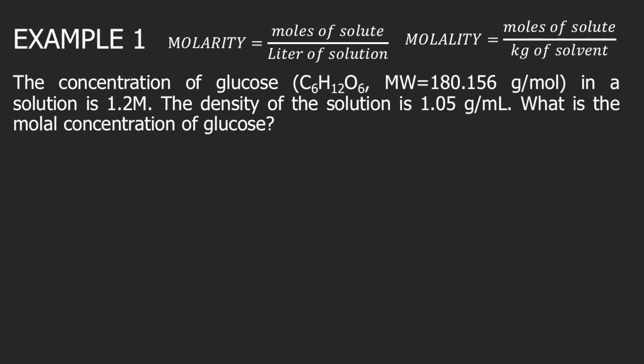Let's try our first example. The concentration of glucose in a solution is 1.2 molar. The density of the solution is 1.05 grams per mL. What is the molal concentration of glucose? In this problem, we are given 1.2 molar, and we will convert this to molal concentration. So, 1.2 molar is equivalent to 1.2 moles of glucose per 1 liter of solution.